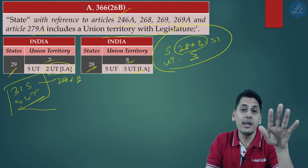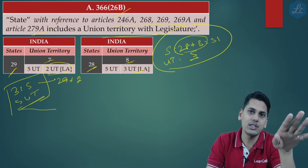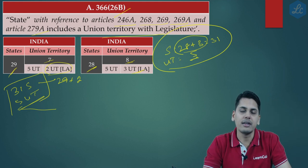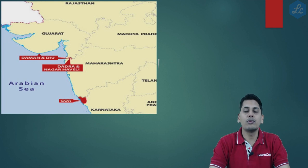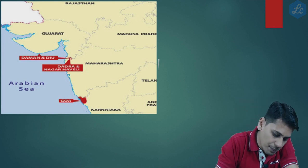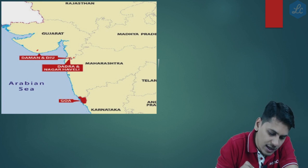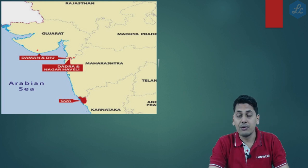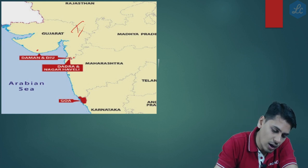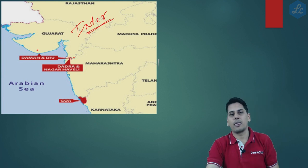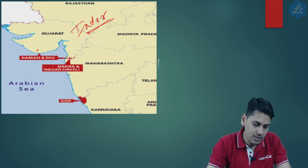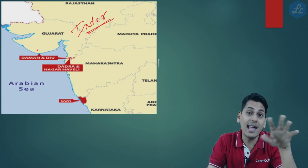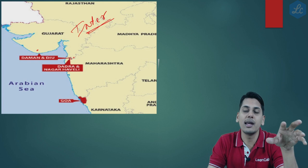As of now, for the purpose of GST, there are 31 states and 5 union territories. The breakup of 31 is 28 states and 3 union territories with legislative assembly. Consider a person supplying goods from Daman and Diu to Dadra and Nagar Haveli: prior to amendment, this supply would have been called an interstate supply, because they were two different union territories and the location of supplier and place of supply were in two different union territories.